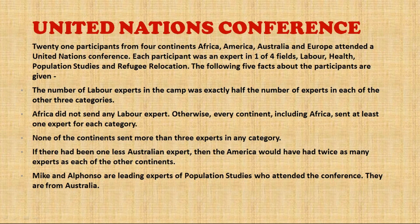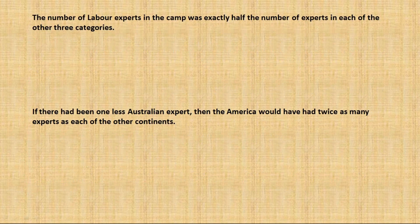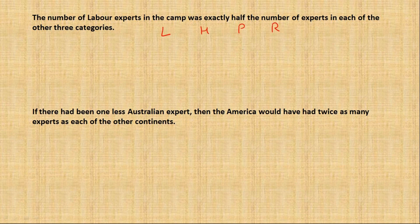There are four fields - labor, health, population, and refugee - four continents, and 21 participants. I've broken the five clue-points into two parts. The first two points help identify how many experts per category are available and how many experts each continent sent. The first point says that except labor, there were equal numbers of experts in each category. So if labor has x, the other three have 2x each.